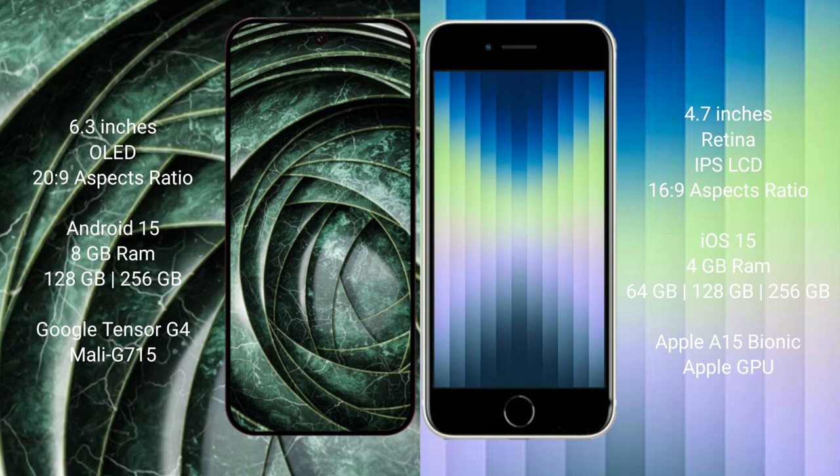The Google Pixel 9a runs on the Android 15 operating system, while the iPhone AC runs on the iOS 15 operating system.